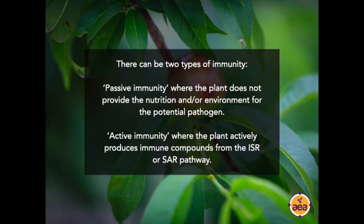We know that many of these organisms that we refer to as pathogens are quite ubiquitous in the environment — almost universally present. When you have a disease expressing itself in one field and a second field that has not succumbed to the disease, there is often very little or even no difference in the quantity of the pathogenic organism in each gram of soil. The only difference is the other suppressive organisms that are either present or absent. The second type of immunity is active immunity, where plants are actively producing immune compounds from the induced systemic resistance and systemic acquired resistance pathway, sometimes referred to as the salicylic acid or jasmonate pathway.